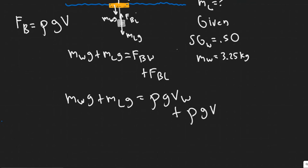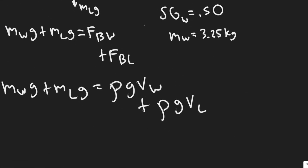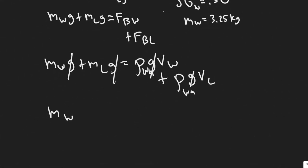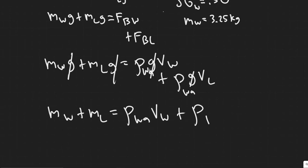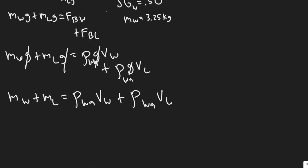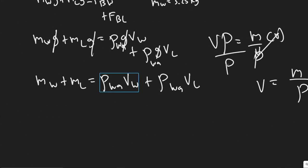Keep in mind, one term is the volume of the wood and the other is the volume of the lead. The rho in the buoyancy formula is the density of the surrounding fluid — in this case, water, rho_water. G cancels from every term. So we have: mass of the wood plus mass of the lead equals density of water times volume of the wood plus density of water times volume of the lead. Now we're going to replace each volume using the relation volume equals mass over density.